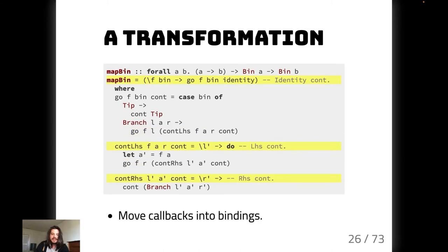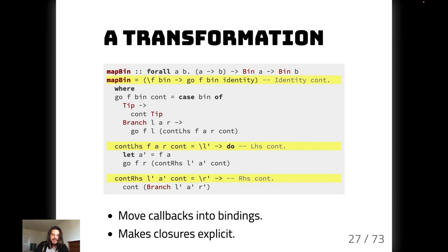Our next step is to lift these callbacks into explicit named bindings. This makes everything clear about what's actually happening — all the variables involved. We make our closures explicit and ensure we capture all of them and pass them to the continuations, making our dependencies very obvious.